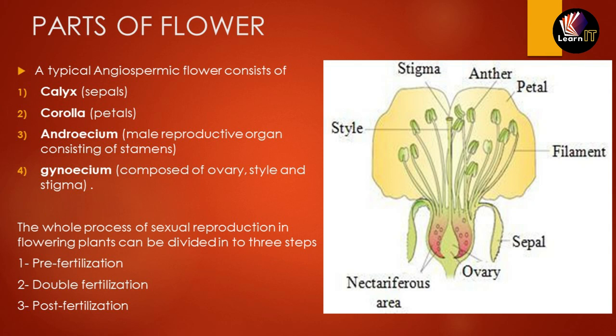Sexual reproduction in flowering plants has been divided into three parts: the first is pre-fertilization, the second is double fertilization, and the third is post-fertilization.